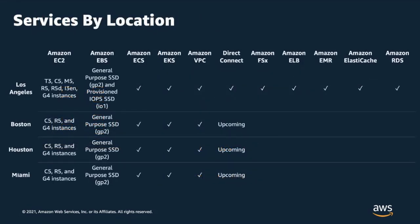While we support a set of local services across Local Zones, some services vary based on the location. You can visit the features page on our website for a full list of supported services by location. In the three new Local Zones in Boston, Miami, and Houston specifically, we're starting with five core compute and network services including Amazon EC2, EBS Volumes, Amazon ECS, EKS, and VPC. Over time, we plan to add additional services including AWS Direct Connect and more EC2 instances in these new Local Zones.